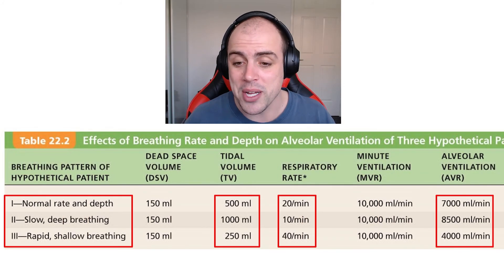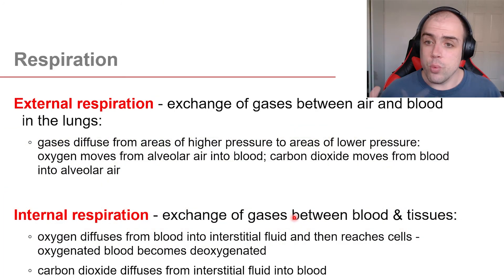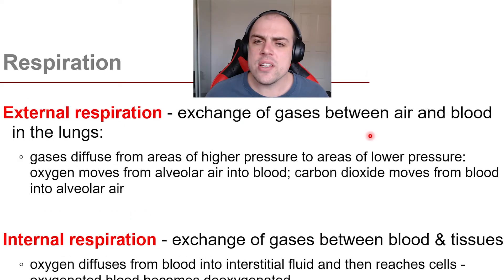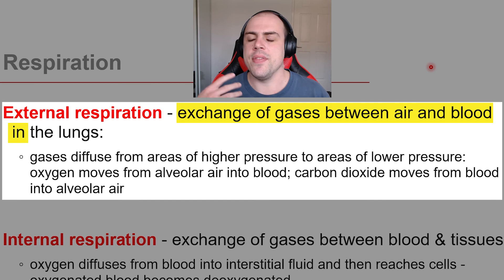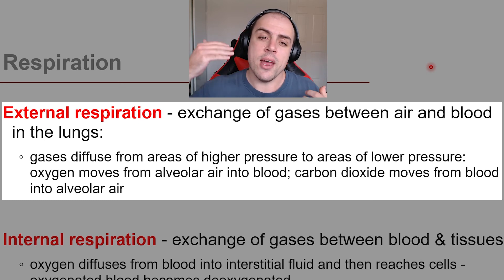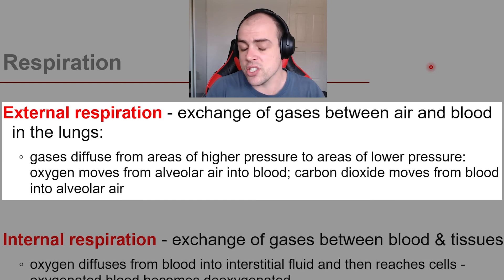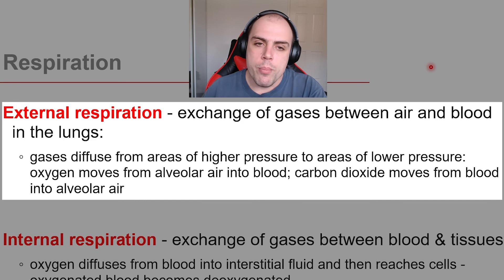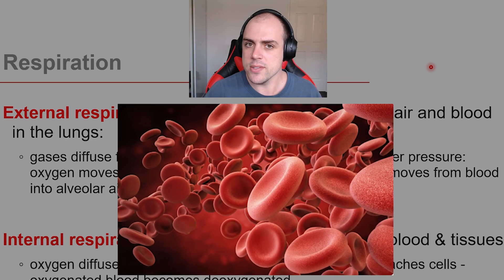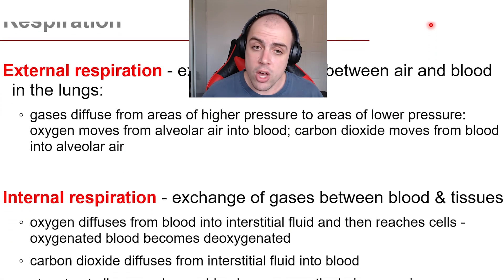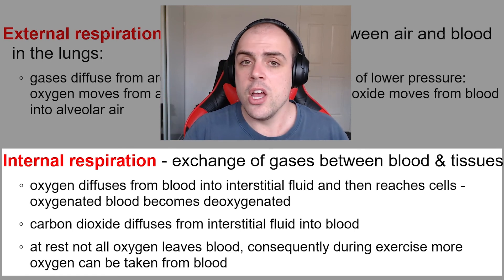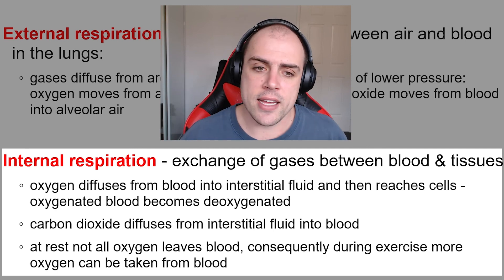When looking at moving gases around the body, we have two main processes: external respiration and internal respiration. External respiration is when we exchange gases between the blood and the lungs — ventilating air right down into the alveoli to move oxygen into the blood and remove carbon dioxide. That oxygen then moves via hemoglobin proteins in our red blood cells and is transported to our tissues. From there, the oxygen moves into our tissues and we remove carbon dioxide and transport it back to the lungs — that exchange between blood and tissues is internal respiration.